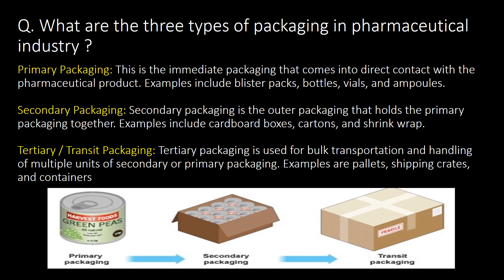This is a basic and important question: what are the three types of packaging in the pharmaceutical industry? First type: primary packaging — this is the immediate packaging that comes into direct contact with the pharmaceutical product. Examples include blister packs, bottles, vials, and ampoules.